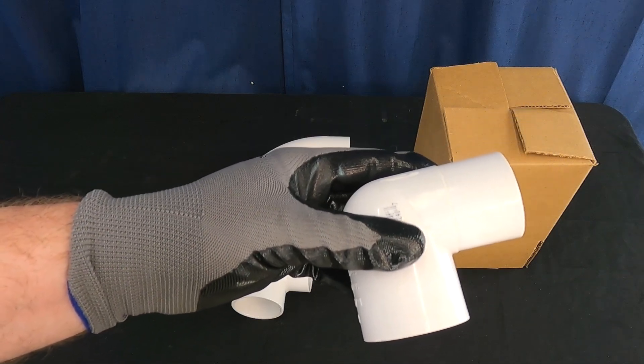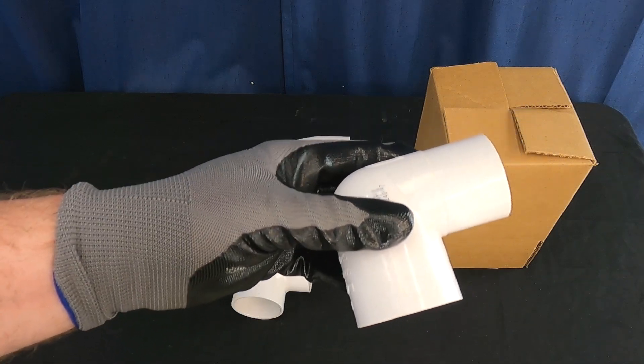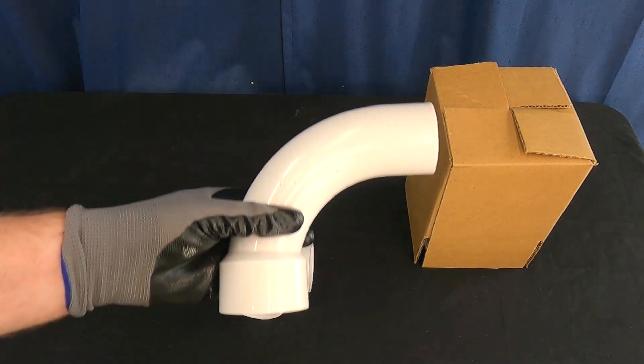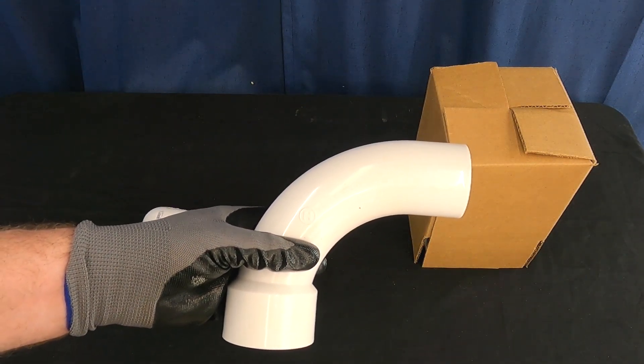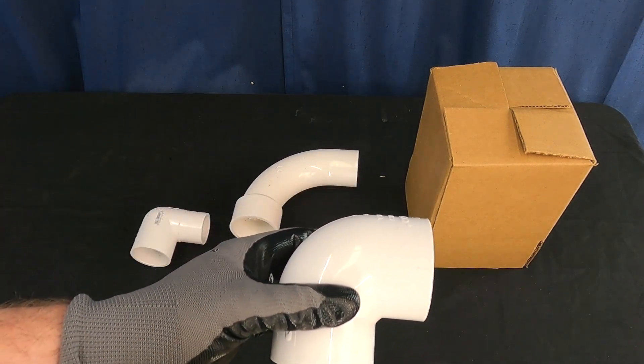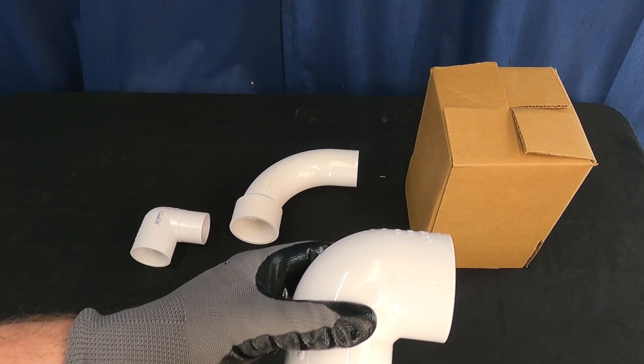So then I started talking about sweep elbows because if you're gonna do better let's go for the gold here. And that's these guys here the long radius 90. This is a short radius 90. This is actually perfectly acceptable to use.